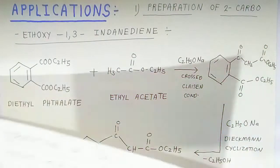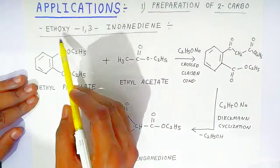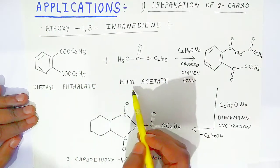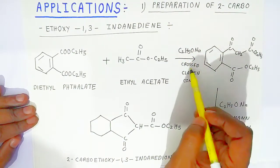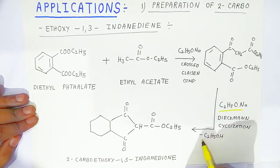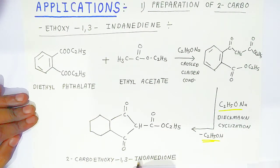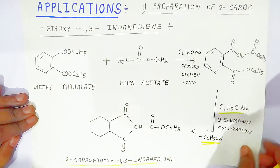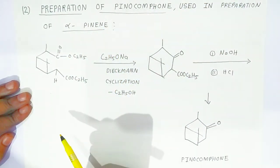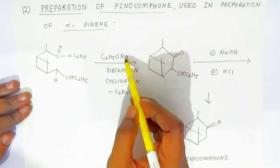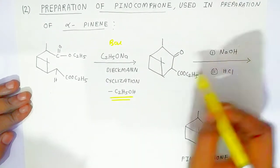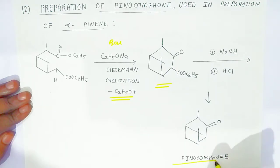For the applications of Dieckmann cyclization: the first is preparation of 2-carboethoxy-1,3-indandione. Diethyl phthalate combines with ethyl acetate in the presence of base C₂H₅ONa — first a cross Claisen condensation takes place to form an intermediate, then Dieckmann cyclization occurs by elimination of alcohol to give 2-carboethoxy-1,3-indandione. The second application is preparation of pinocamphone used in preparation of alpha-pinene. In the presence of sodium ethoxide, Dieckmann cyclization takes place by elimination of alcohol, and on adding NaOH and HCl, pinocamphone is formed.